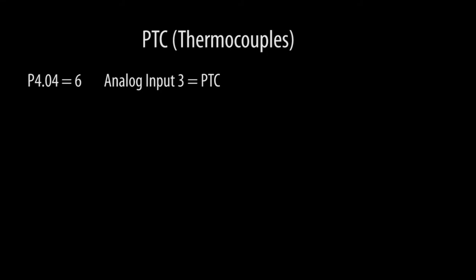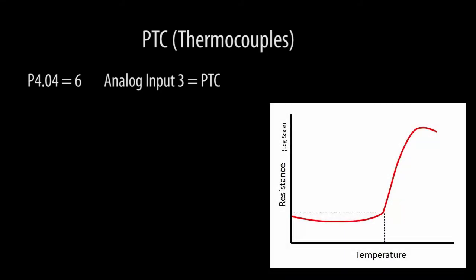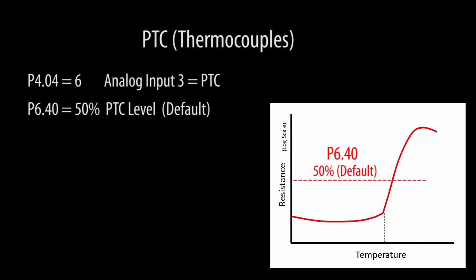Everything is pretty much the same when using a PTC device, except since the PTC rapidly changes when it reaches its limit, you only have one level to set to look for that transition. And the default value of 50% is usually fine. The only other difference for PTC devices is you need to make sure the RTD level 1 drop frequency is zero. That tells the drive we are using a PTC sensor and not an RTD.